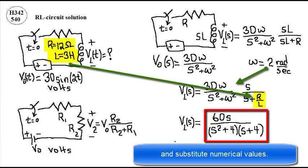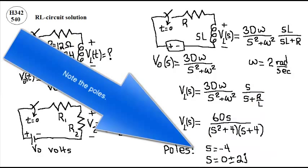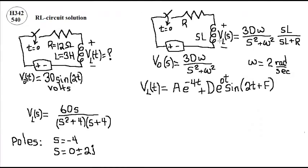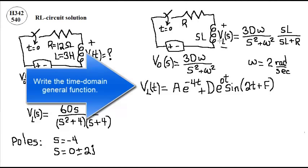Substitute numerical values. Note the poles. Write the time-domain general function.